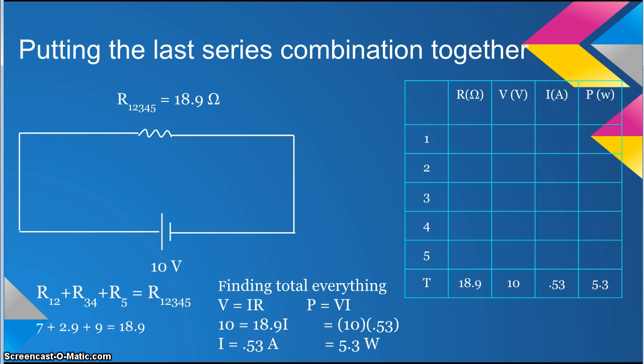Since we found the total resistance and we already knew the total voltage, which is 10, we can now solve for the current by using the equation V equals IR. Plug in your numbers and you will get I equals 0.53.